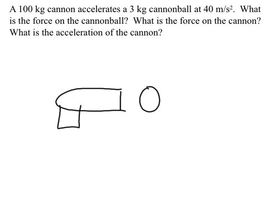Our cannon has a mass of 100 kilograms and the cannonball has a mass of 3 kilograms. According to the problem, the cannonball is accelerated at 40 meters per second squared.